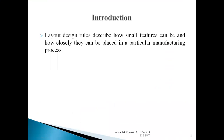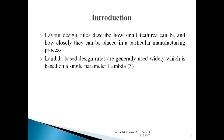Layout design rules describe how small features can be designed and how closely they can be placed in a particular manufacturing process. Lambda-based design rules are widely used, which are based on a single parameter called lambda. Generally, lambda equals channel length divided by 2, i.e., lambda = L/2. For example, if the channel length is 180 nanometers — the distance between the source and drain of a MOSFET — then lambda will be 180/2 = 90 nanometers. Instead of naming each layer such as metal, diffusion, or polysilicon in terms of nanometer values, we represent them using lambda. Hence the name: lambda design rule set.